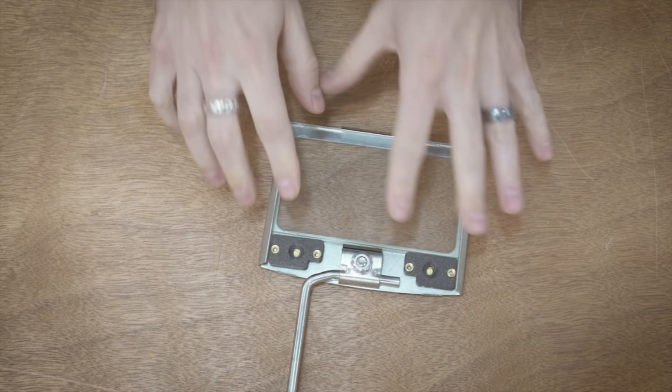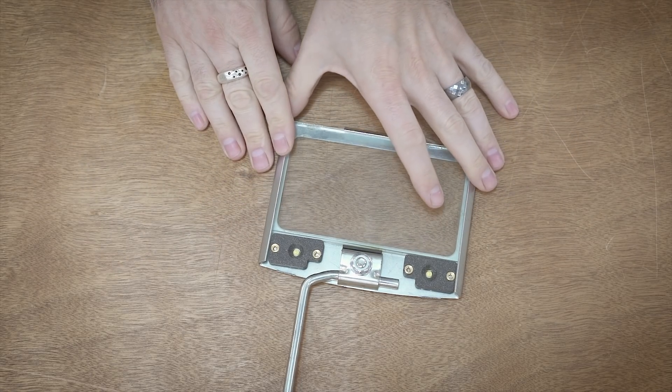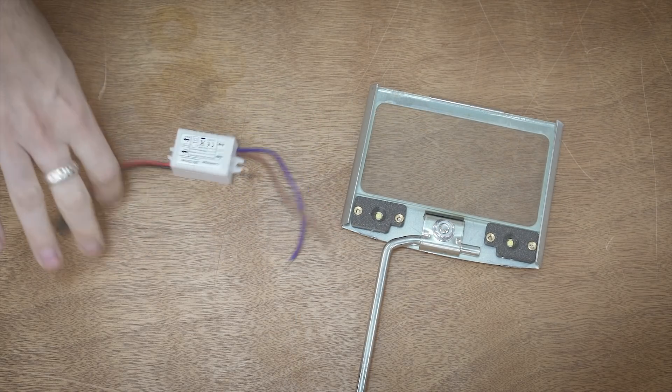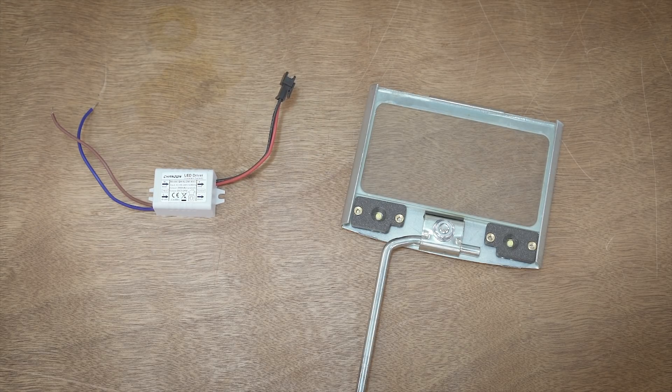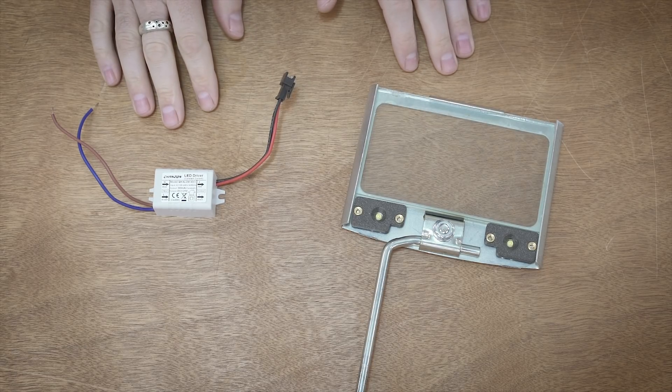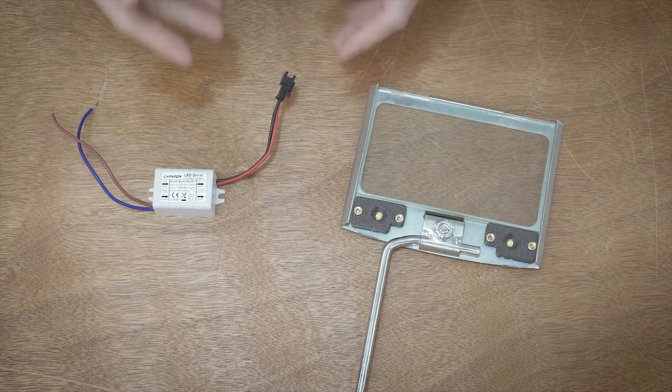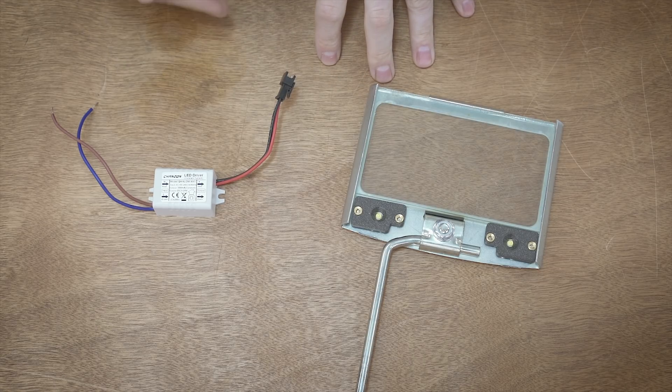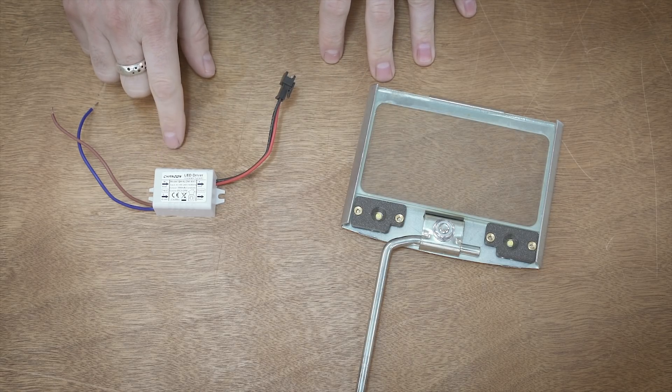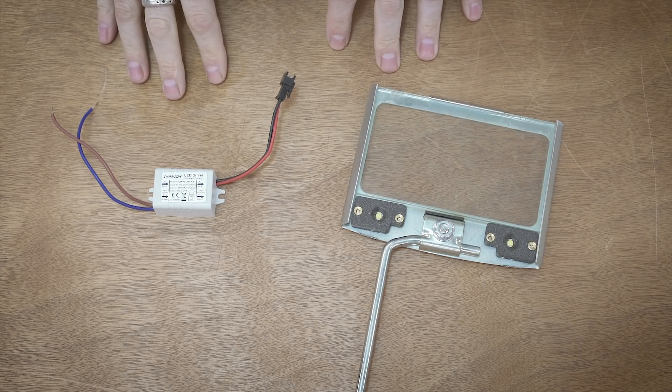Now that we have the LEDs mechanically mounted, we need to get some power into this. We're going to be using a constant current LED driver. A constant current LED driver is quite simply a power supply, but instead of supplying a constant voltage like a 12-volt power supply, this actually provides constant current, and the voltage fluctuates depending on the load.